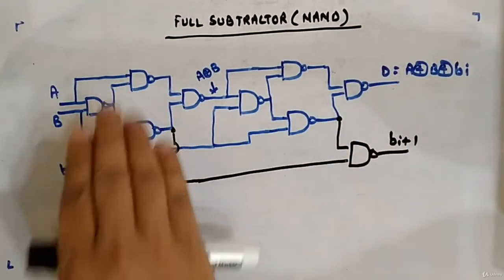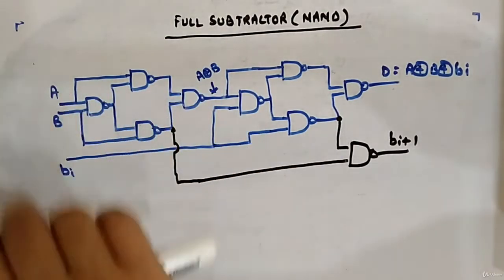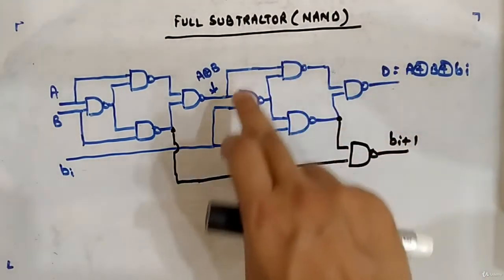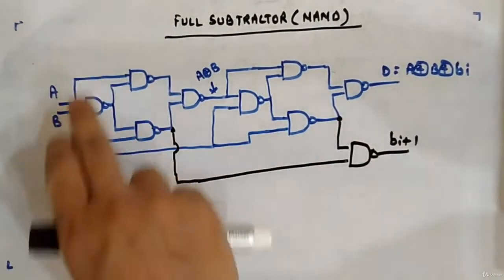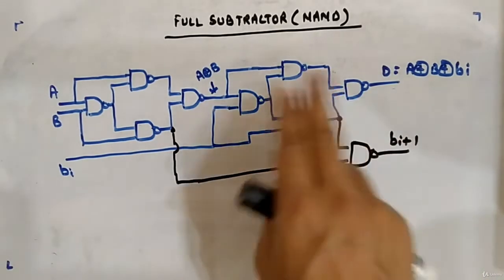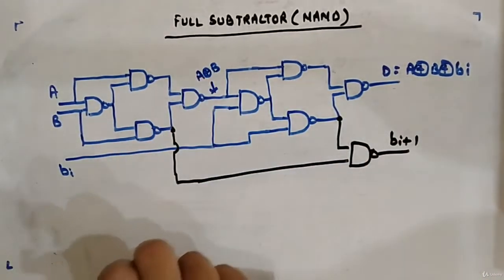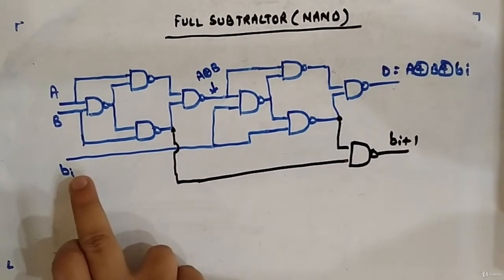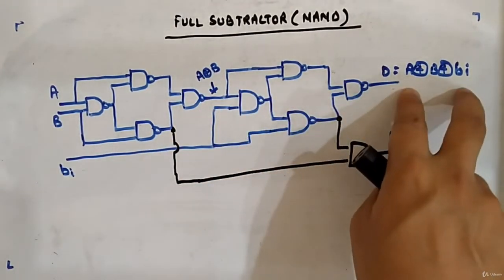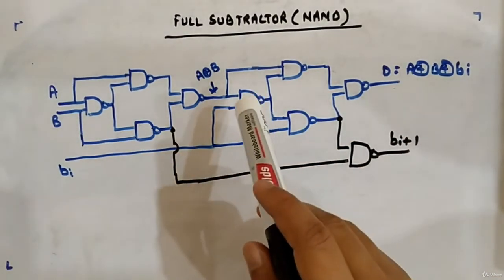You can see these four gates — the arrangement of four gates will give you the XOR of the inputs, A XOR B. Similarly, this four-gate arrangement, which is a copy of the first, will give you the XOR of two inputs. Here the input is A XOR B and the other input is BI, so A XOR B XOR BI is what you are getting. This is similar to what we had in the full adder.